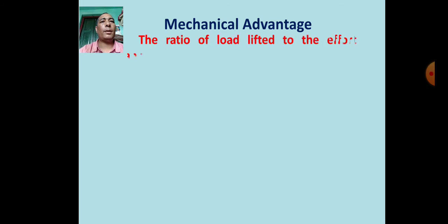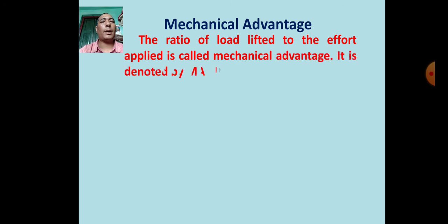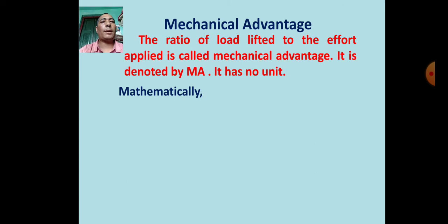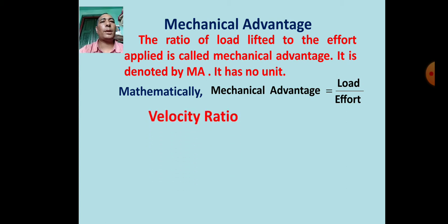The ratio of load lifted to the effort applied is called mechanical advantage. It is denoted by MA and has no unit. Mathematically, mechanical advantage equals load upon effort: MA = L / E.